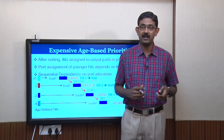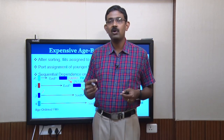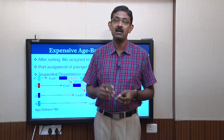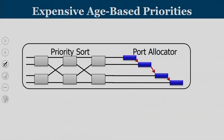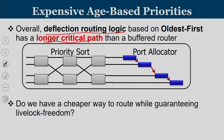There exists a sequential dependence because the output port of the nth priority flit can only be determined after knowing what ports are available after satisfying the first n flits. The implementation uses a priority sorting circuit followed by a sequentially connected port allocator. Overall, the deflection routing logic — including the flit ranking priority sort circuit and sequential port allocator — results in a longer critical path than a conventional buffered router. Can we make it cheaper while still guaranteeing live lock freedom? That is what we will see next.